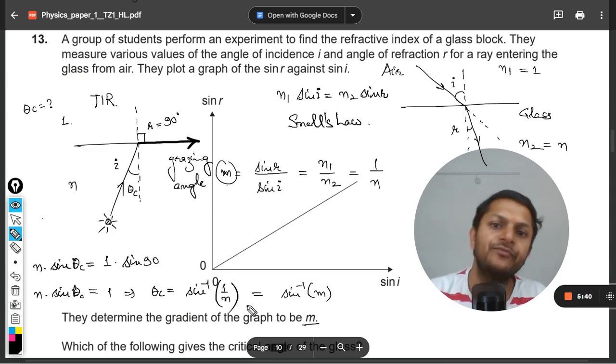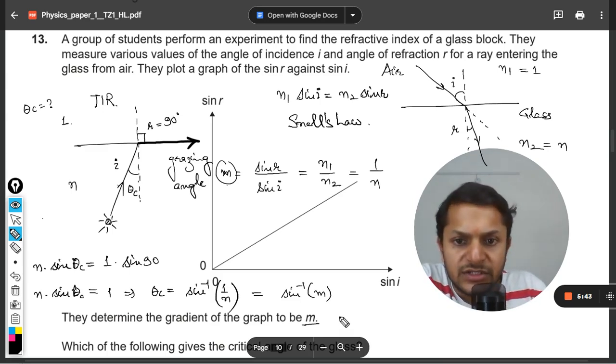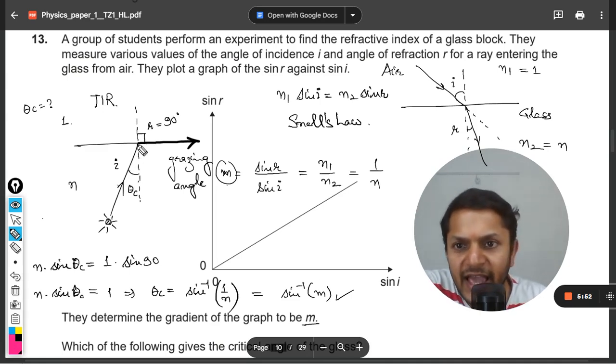Clear. So the answer, we will see what is the answer, but here let me explain you a bit more about the TIR. Couple of things, you see. What is TIR now? If the angle of incidence is lesser than theta critical, the light is going to come out of the medium.